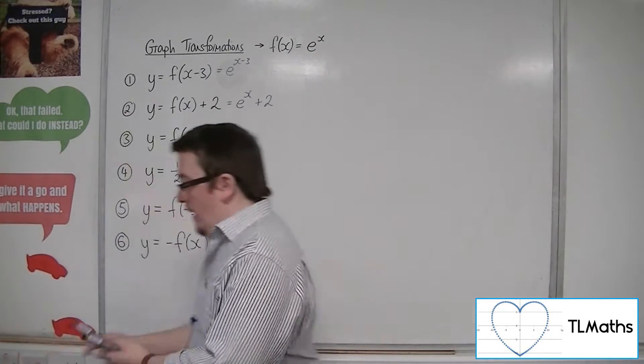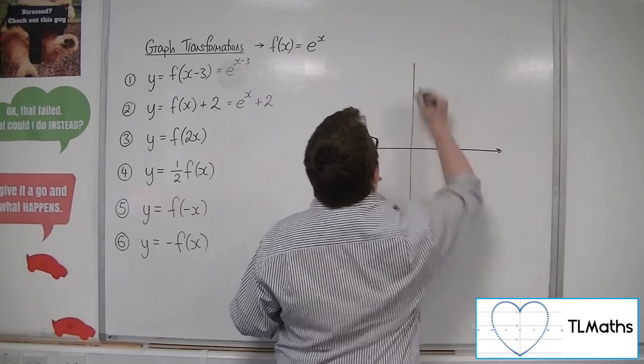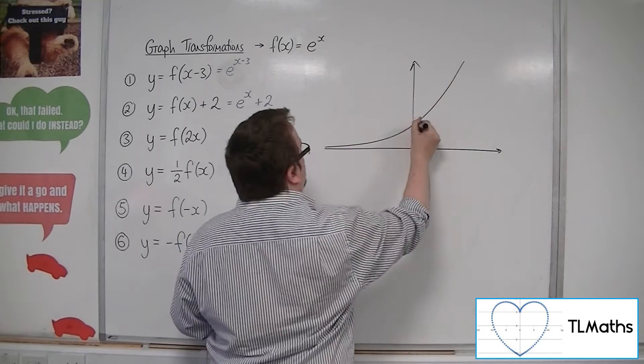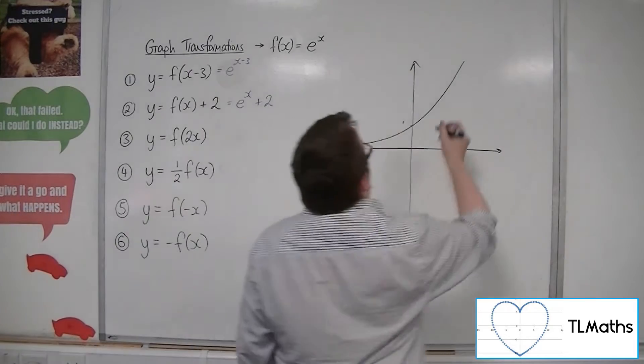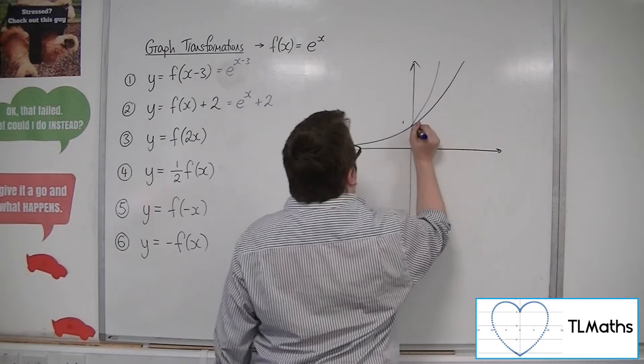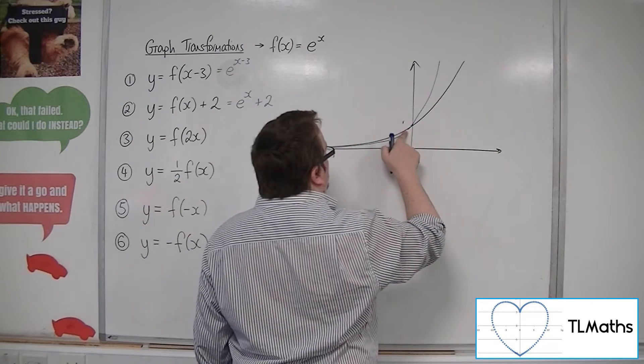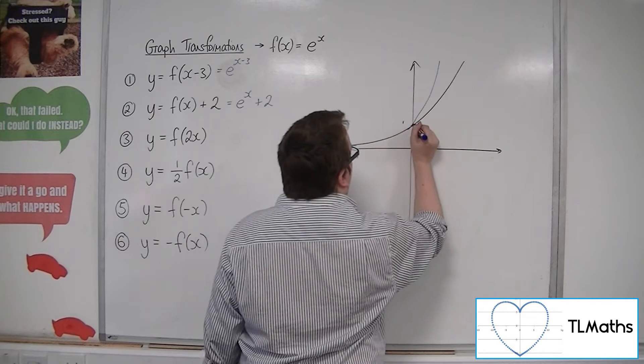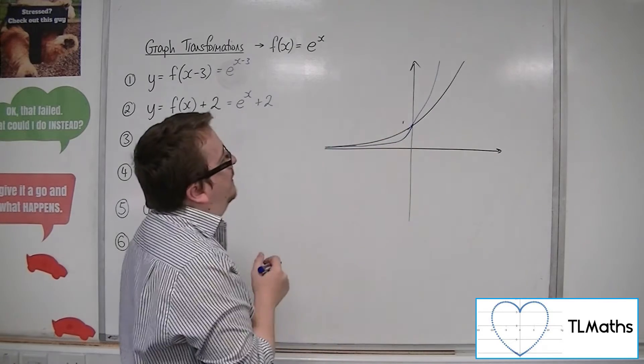So f of 2x. So a stretch by factor of a half parallel to the x-axis. So all the x-coordinates would half. Would look something like this. That would be a bit different. Let's try and sort that out.